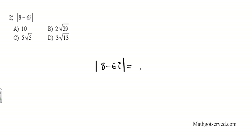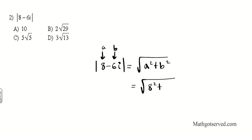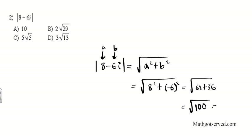Let's take a look at number 2. We want to find the absolute value of 8 minus 6i. Employing the Pythagorean theorem, we take the square root of a squared plus b squared. Remember a is the real part and b is the imaginary part — just the coefficient. So we get the square root of 8 squared plus negative 6 squared, which becomes the square root of 64 plus 36, which is the square root of 100. The square root of 100 is 10, so the final answer for number 2 is 10.